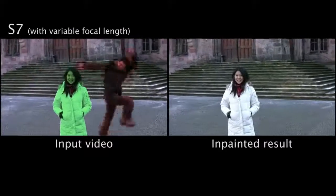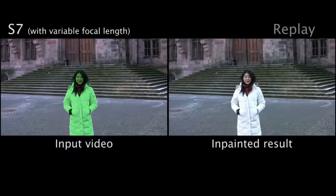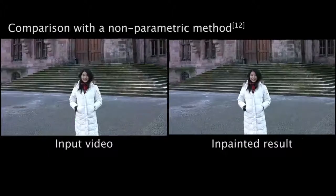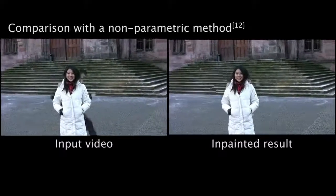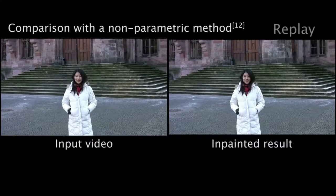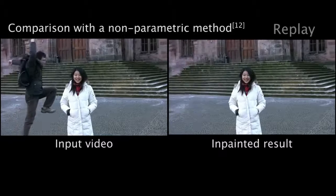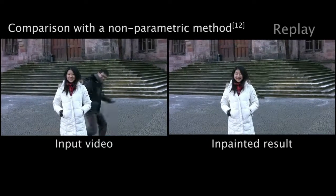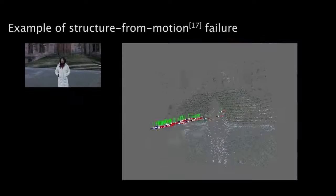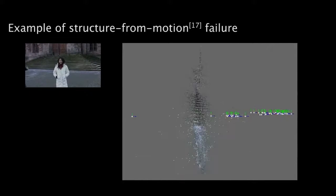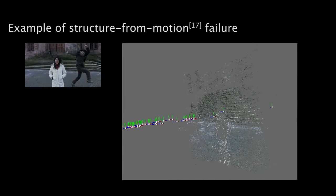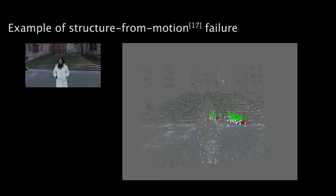The last sequence was captured with small camera motion and with a zoom into the person in the centre. For comparison, we in-paint this sequence using a non-parametric method which assumes a static camera. Despite the fact that the camera motion is small, these methods fail to produce geometrically consistent results. This sequence is also challenging for in-painting methods based on structure from motion and multi-view stereo. The narrow baseline and variable focal length makes it difficult to perform camera calibration.